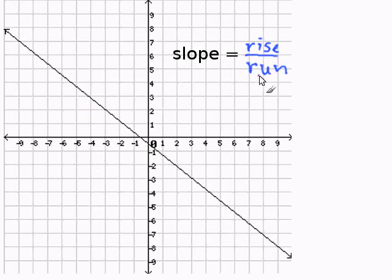Rise is the vertical direction of the line, and run is the horizontal direction of a line. To start, I'm going to pick two points on this line. I'm picking a point here, and a point here.